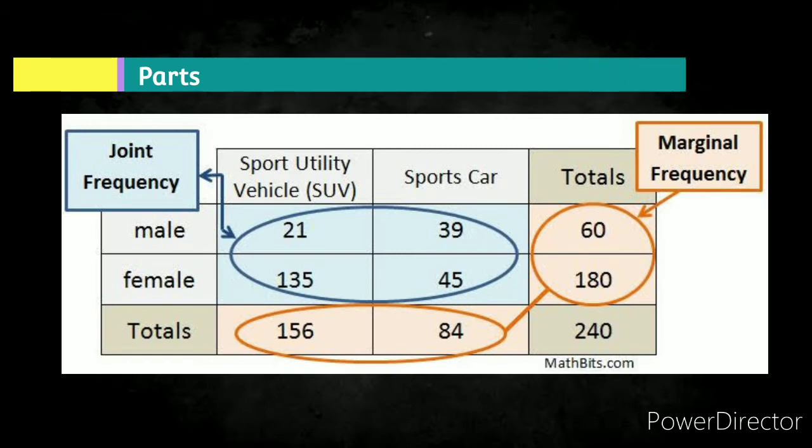So, this is the parts of 2x2 contingency table. We have joint frequency. It describes the four cells inside the table. We have A equals 21, B equals 39, C equals 135, and D equals 45.